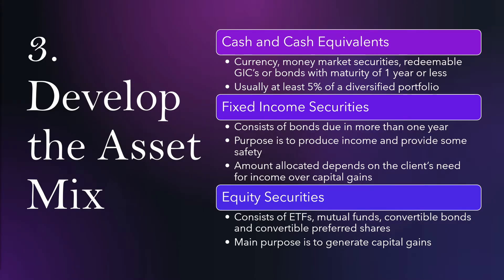Step number three is to develop the asset mix. Cash and cash equivalents include currency, money market securities, redeemable GICs, or bonds with a maturity of one year or less. Usually, you will have at least 5% of a diversified portfolio in cash; for a safer portfolio, maybe 10%, but that is usually the max. Fixed income securities consist of bonds due in more than one year. Their purpose is to produce income and provide some safety. The amount allocated depends on the client's needs for income over capital gains and for safety over return.